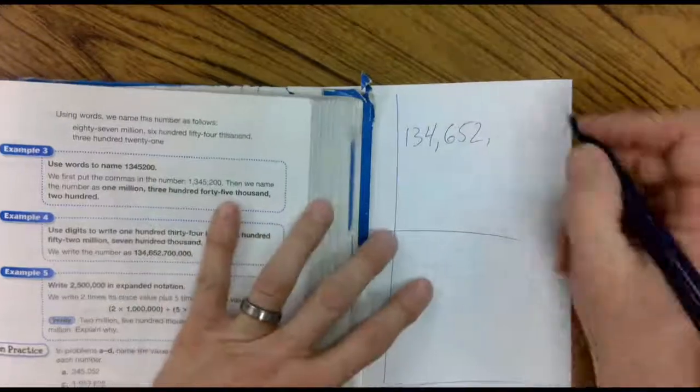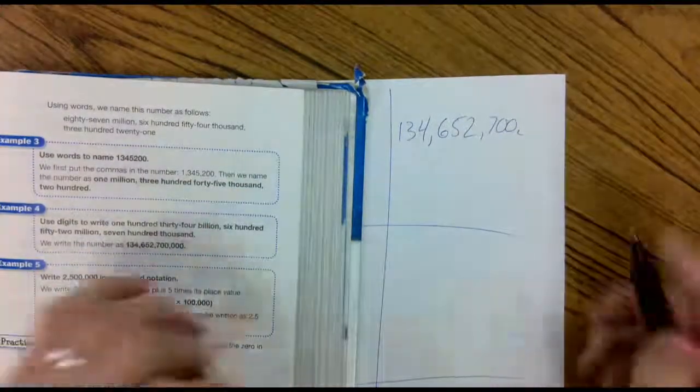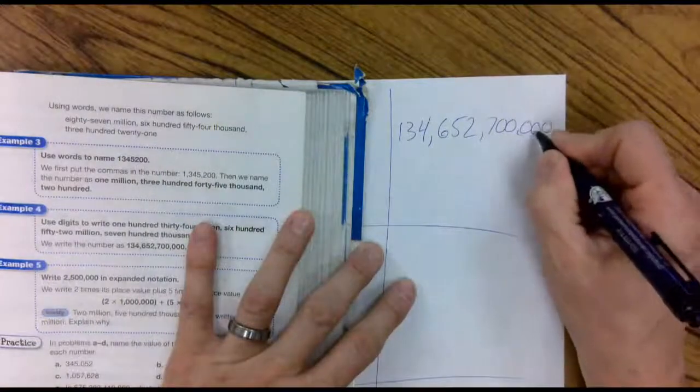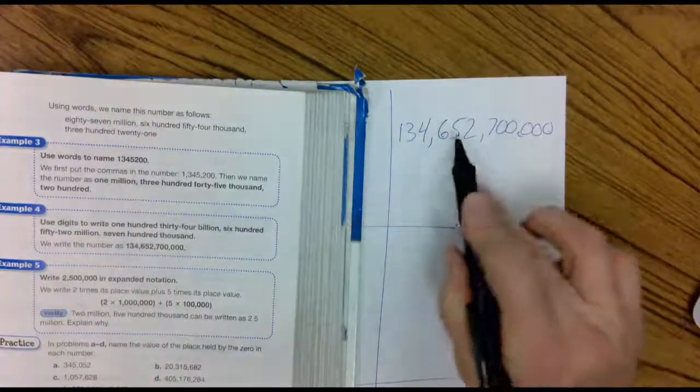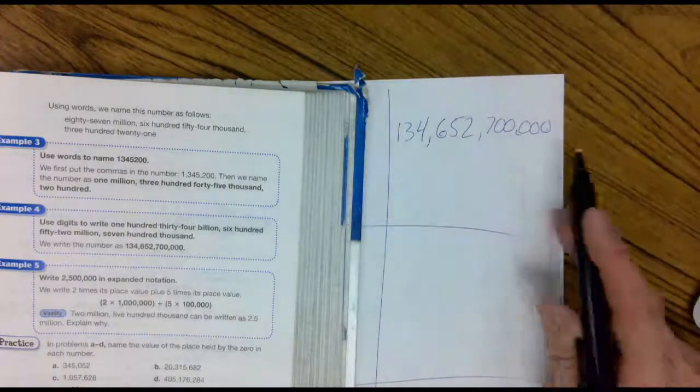Seven hundred thousand. Seven hundred thousand. And now don't forget, we still need these last three. Ones, tens, hundreds. This is the thousands. This is the millions. This is the billions. You still need the ones, tens, hundreds.